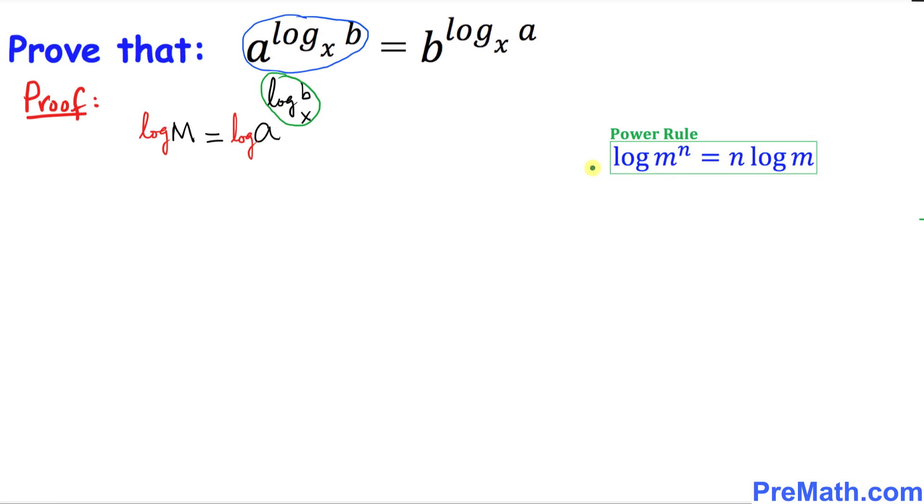We are going to use this power rule. This says if you have log of m and then you have an exponent or power n, then n goes in the front. Same thing, I'm going to use this rule. Whatever this exponent is, I'm going to move it to the front. So we have log of M equals to log base x of b times log of a.